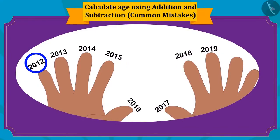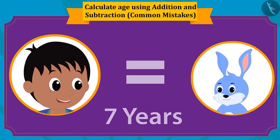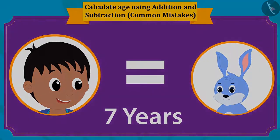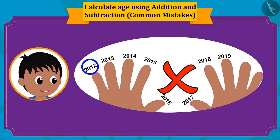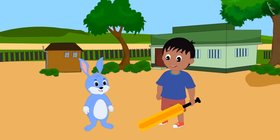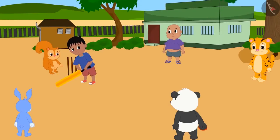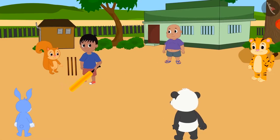The rest of the children also caught Raju's mistake, and it turned out that Raju and Bunny are exactly the same age. Raju understood his mistake, and now Raju and Bunny decided to play cricket together. All children started playing cricket together.